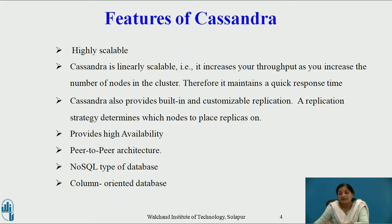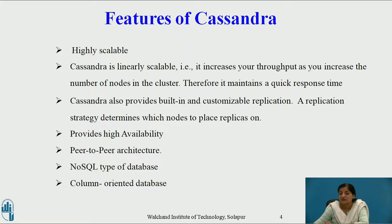Cassandra is called a NoSQL type of database — that is, Not Only SQL type of database. These databases are non-relational databases, that is, they are schema-free. Such types of databases can store huge amounts of data, that is, in terms of petabytes.